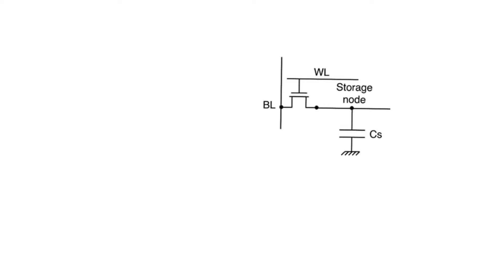This is a one-transistor DRAM cell. It's obviously much smaller than an SRAM cell, and also much smaller than a three-transistor DRAM cell. We have to understand how reading and writing works in a one-transistor DRAM, because especially when we consider reading, we will understand why this kind of memory is not easy to deal with. DRAMs are extremely dense, which is why they are favorable for creating main memories.